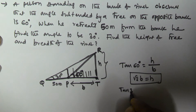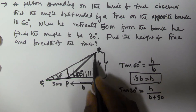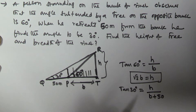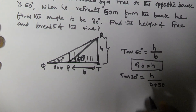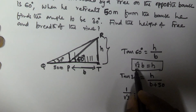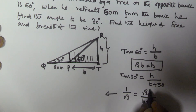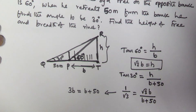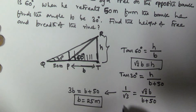From position Q, tan 30 equals h divided by (b + 50), since the base is now b plus the 50 meters retreated. Substituting h = √3b, we get 1/√3 = √3b / (b + 50), which gives b + 50 = 3b, so 3b = b + 50, therefore b equals 25 meters. The breadth of the river is 25 meters.